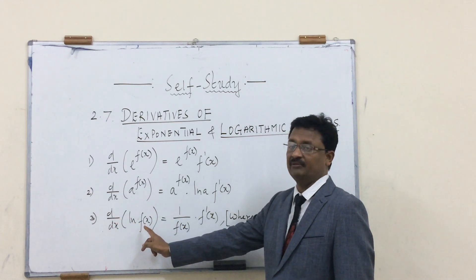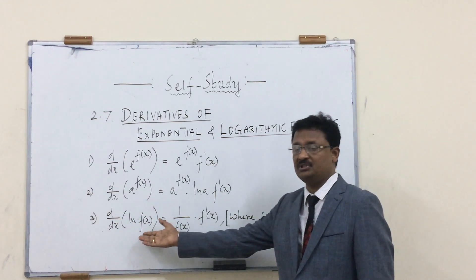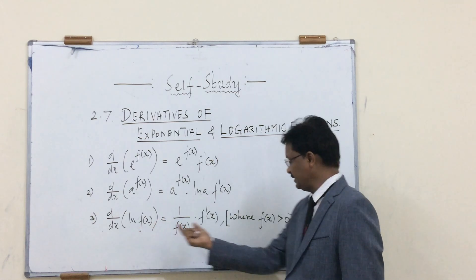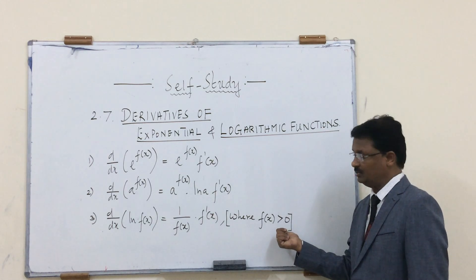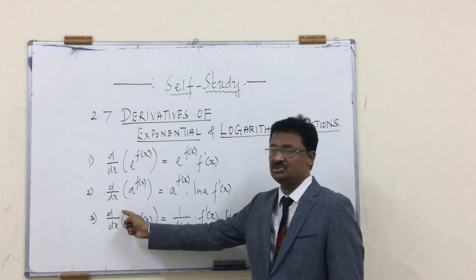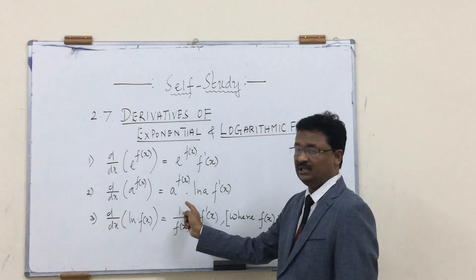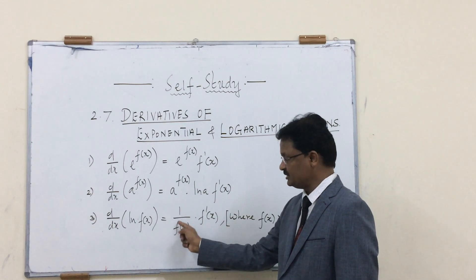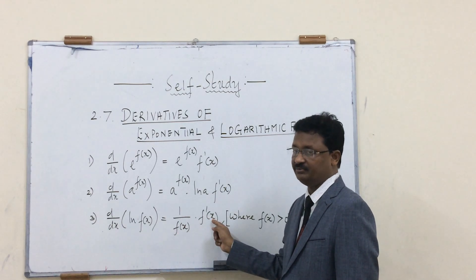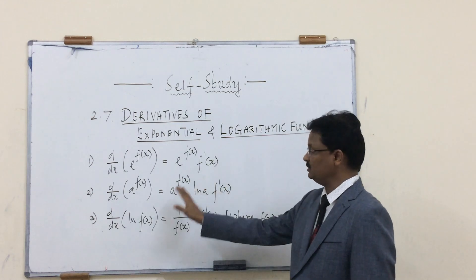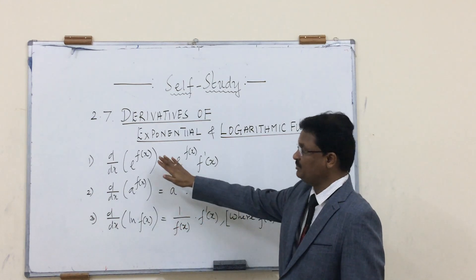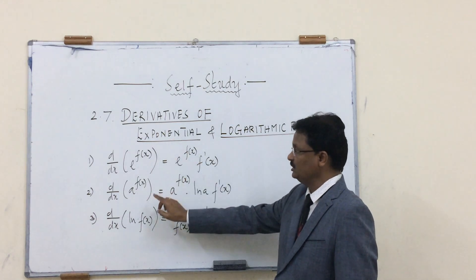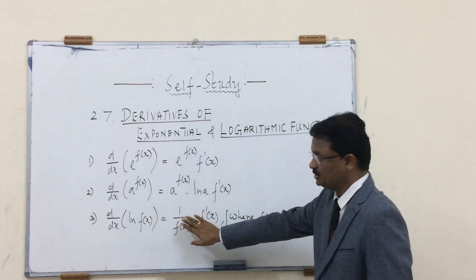Now the logarithmic function: the derivative of d/dx of ln(f(x)). The logarithmic function requires f(x) to always be greater than 0. The differentiation of ln(f(x)) is 1 over f(x) times f′(x). This is also called the chain rule. These are the three forms — two exponential and one logarithmic.